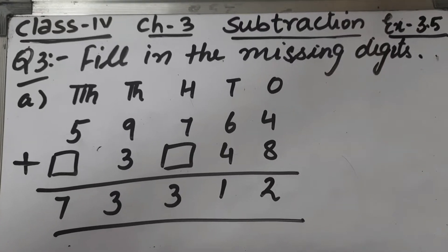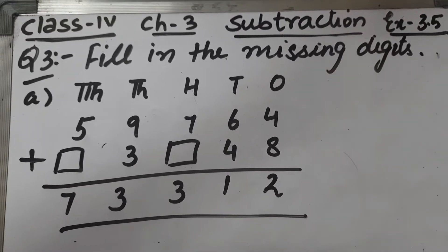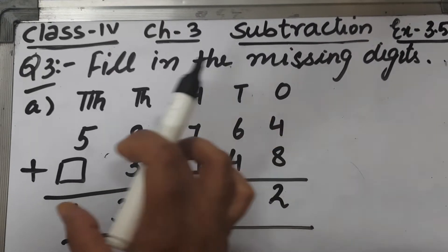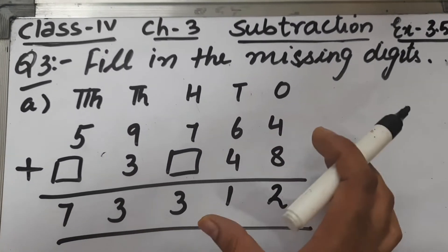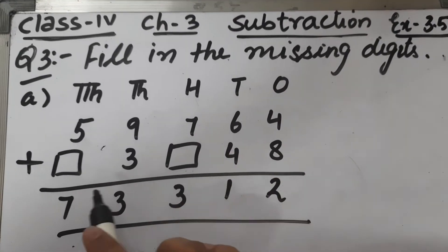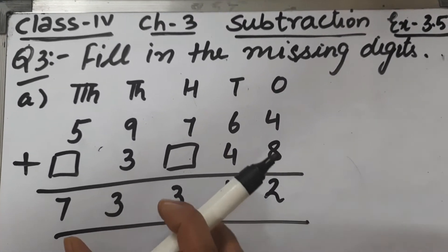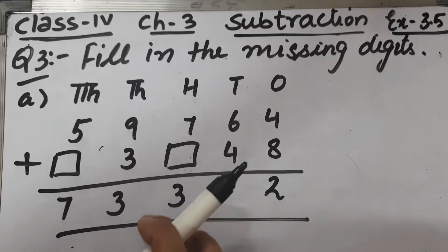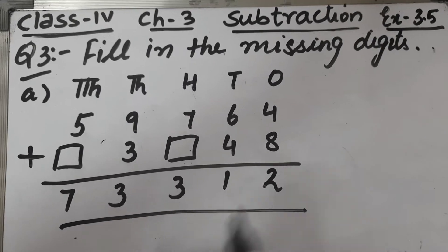Let's start question number 3 of Exercise 3.5. The question is to fill in the missing digits. In part A, we have 59,764 and we have to find the missing digits. The sum of these two numbers is given as 73,312.